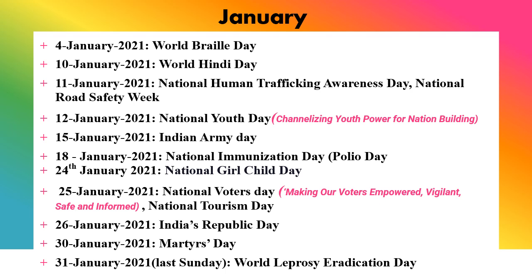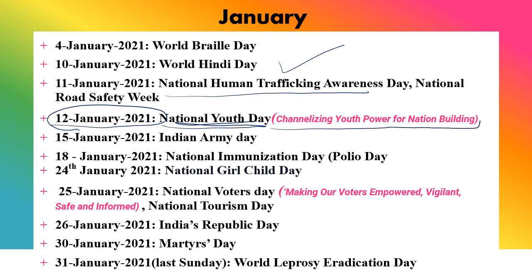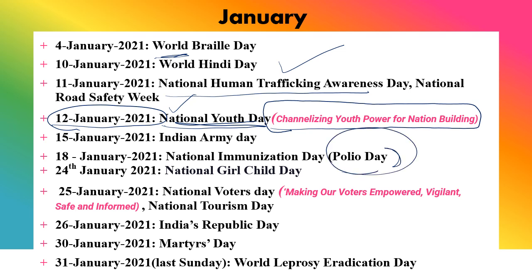Starting with January: 4th January is World Braille Day, 10th January is World Hindi Day, 11th January is National Human Trafficking Awareness Day. 12th January is very important — National Youth Day — and this year's theme was 'Channelizing Youth Power for Nation Building.' Note which day is observed at the world level and which at the national level. 15th January is Indian Army Day, 18th January is Indian Immunization Day, also known as Polio Day.